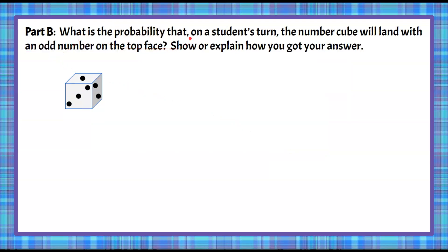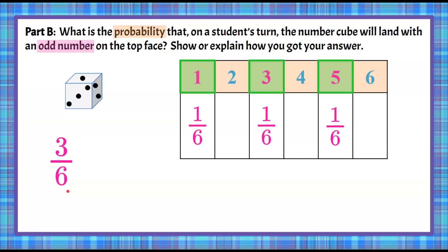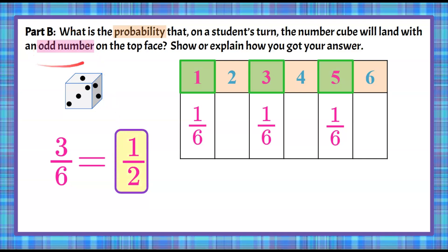Here's Part B: what is the probability that the number cube will land with an odd number on the top face? Using our organized list, we have six possible outcomes. The odd outcomes are 1, 3, or 5. Each individually has a 1 in 6 chance, but together we have three out of six outcomes that are odd — which equals 1/2, or a 50% chance of rolling an odd number.